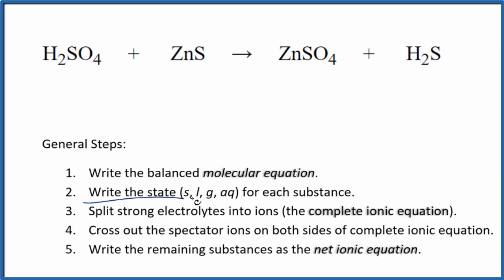Next we can write the state for each substance. So sulfuric acid is a strong acid, it's a strong electrolyte. We're going to write AQ because that will be dissolved in water. Zinc sulfide, that's going to be insoluble in water. So it's going to have to be a solid here. So we'll have solid zinc sulfide.